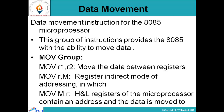The data movement instruction group for the 8085 microprocessor provides the ability to move data. The first is the MOV group: MOV R1, R2 — this moves the value of register R2 into register R1. R1 is the destination and R2 is the source.